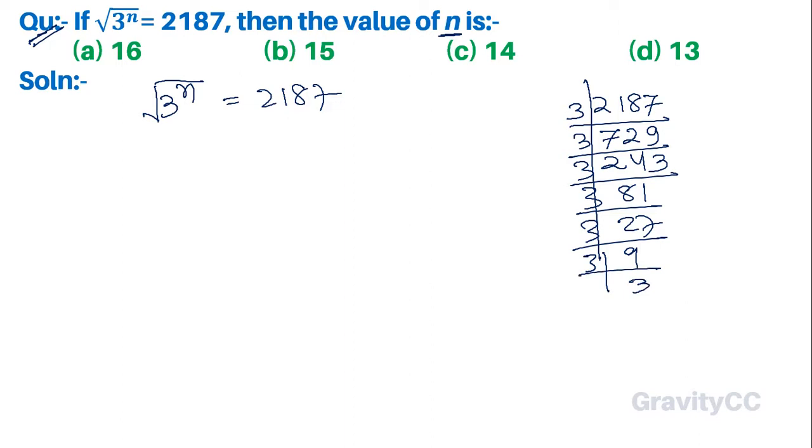9, 3. So 3 to the power n to the power half is equal to 2187. Counting: 1, 2, 3, 4, 5, 6, 7. That's 3 to the power 7.